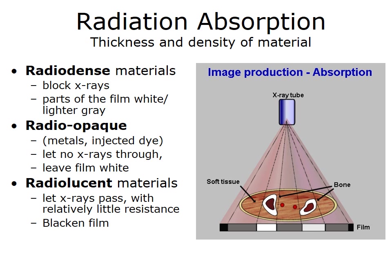Let's talk about radiation absorption. It really depends on two things: the thickness and the density of the material. Things that are very dense to radiographic waves are called radio-dense — they absorb or block much of the X-rays and therefore appear white. Picture a film behind the structure you're trying to image, such as a tib-fib. The X-ray tube projects radiographic waves through. Radio-dense structures block and absorb these waves, so the film remains white — bright white for something like bone. As waves pass through tissue that is not as radio-dense, more waves pass through and they turn the film gray. Radiographic waves that do not hit any body part — just flying through air — will leave the film very black.